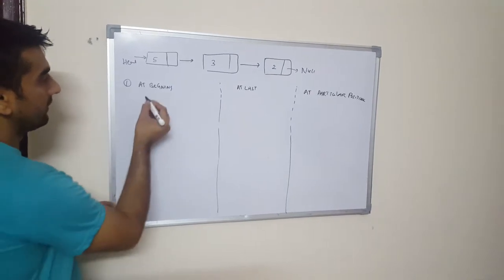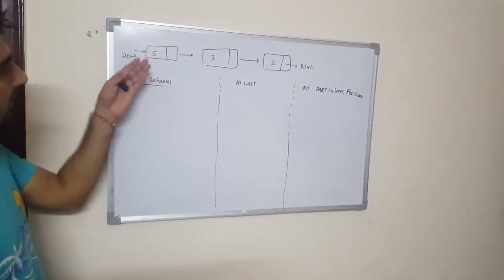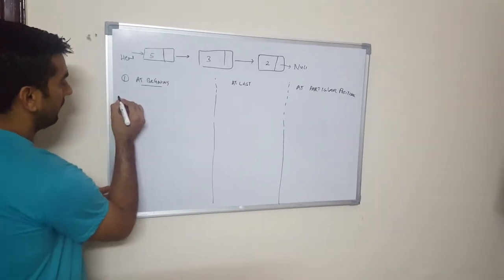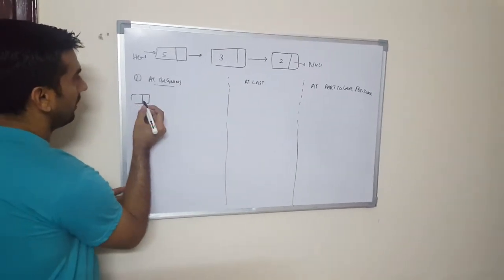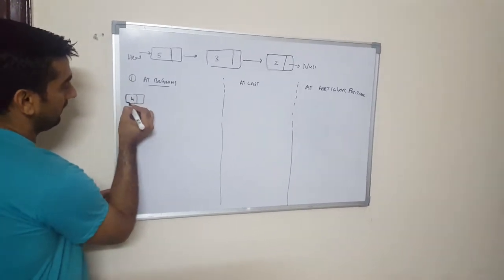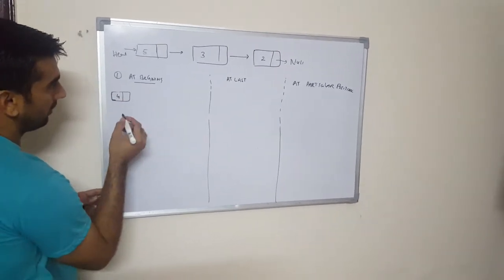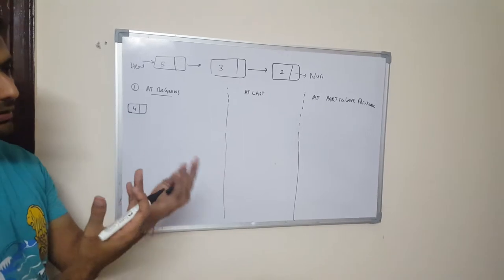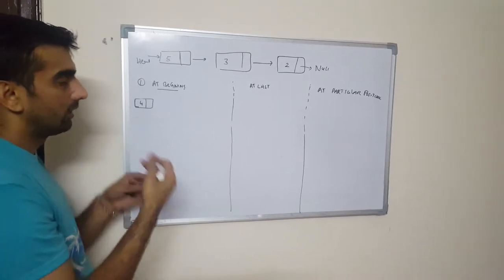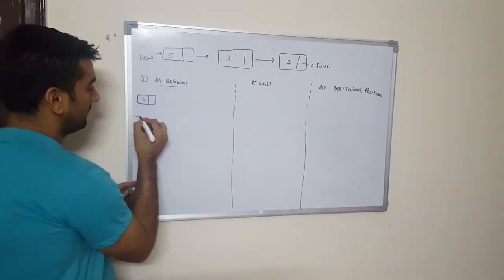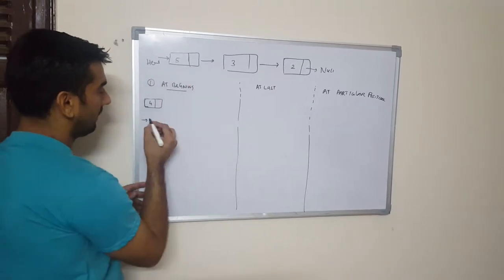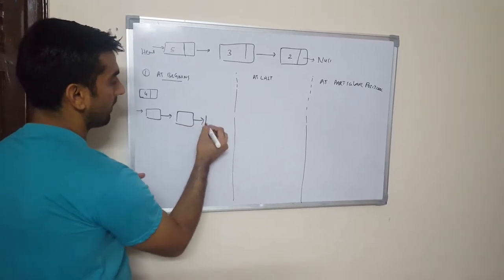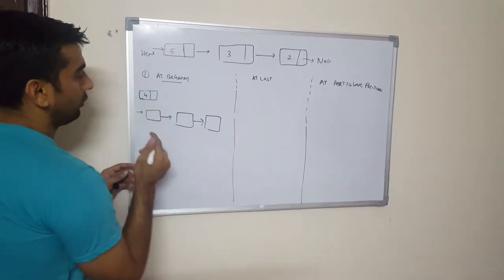First we are going to discuss inserting at the beginning. Let us assume this is our linked list and we have a node with integer data of four that we need to insert. So how is this going to happen in memory or in process? Let us assume this is our linked list and this is the node to be inserted.